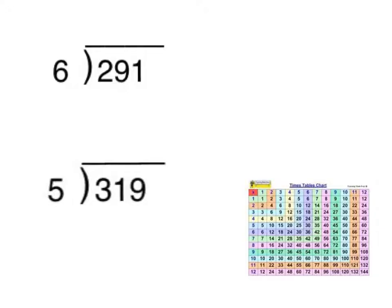So have a look at my first example here. I've got 291 divided by 6. So I start by looking at my 6 and seeing how many times it fits into 2. Now, because I know that 6 is bigger than 2, I can't actually fit it inside it. So put a zero up here to show that I can't actually complete that because 6 is bigger than 2.